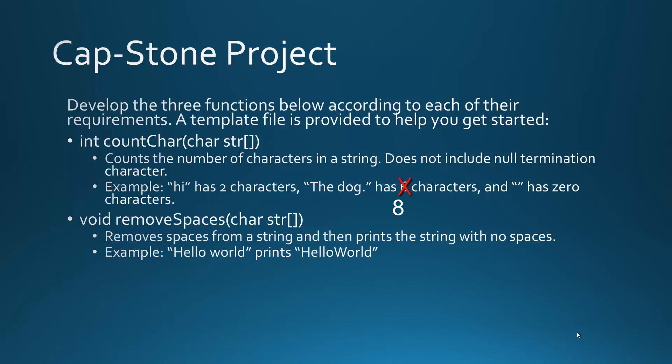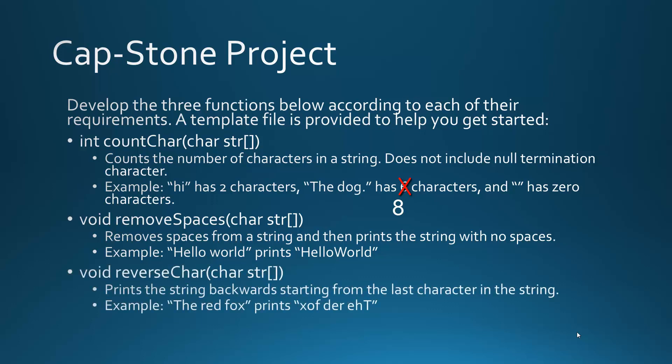`void remove_spaces` will print out a string provided as an array of characters that does not have any spaces. So 'hello world' prints 'helloworld' with no space — pretty straightforward. `void reverse_characters` takes an array of characters and prints the string backwards starting from the last character. This is where you're going to have to take into account the null-terminated string, because you'll have to start iterating from the back — that's a hint.